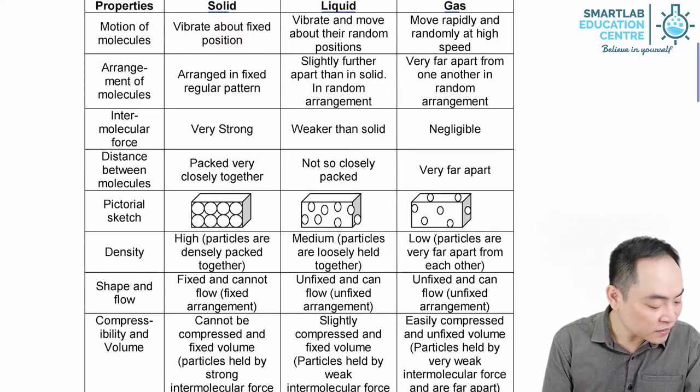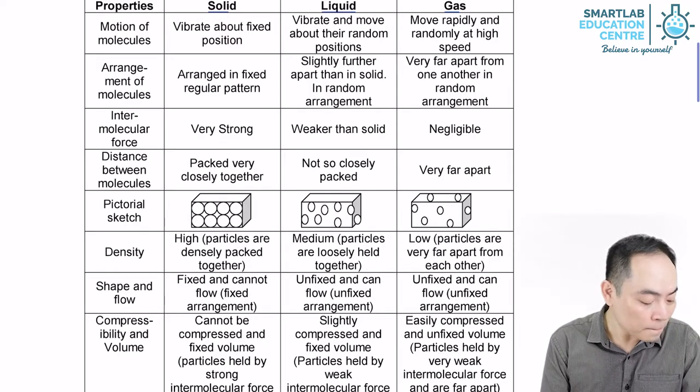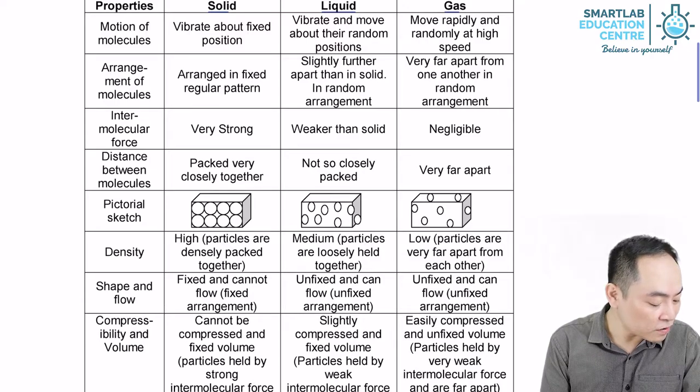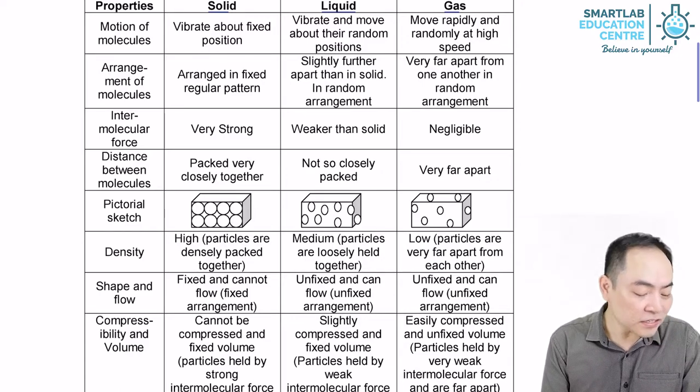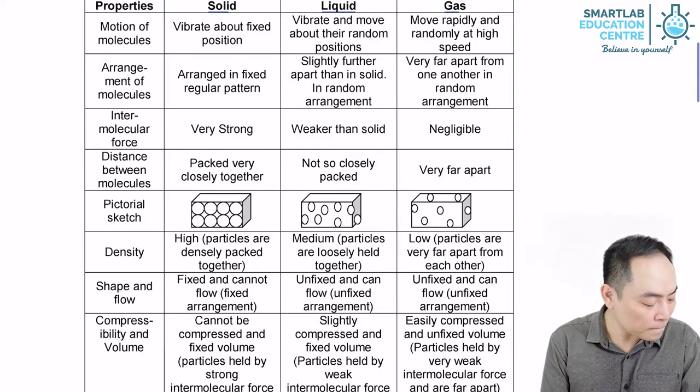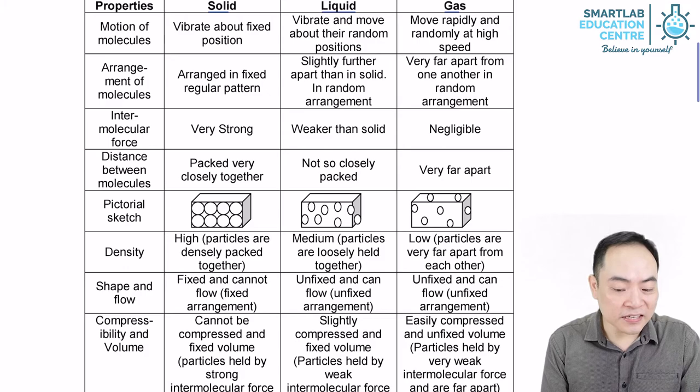For a gas, the particles are far apart from each other. They move freely in all directions and occupy any available space. This model explains why gases have no fixed shape, no fixed volume, and are easily compressed.